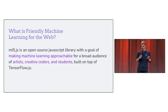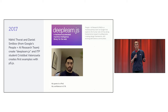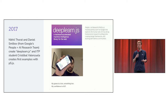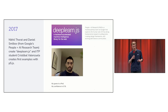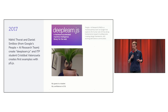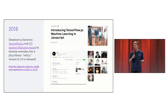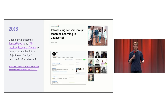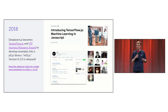A bit of history about ML5: in 2017, DeepLearn.js, a predecessor to TensorFlow.js, was first released, and an ITP peer named Cristobal Valenzuela worked to integrate this library with P5 and created some of the first examples. As TensorFlow.js was released, ML5 grew alongside it. As examples and models were added to TensorFlow, ML5 took them and wrapped them in a friendly and incredibly accessible API.